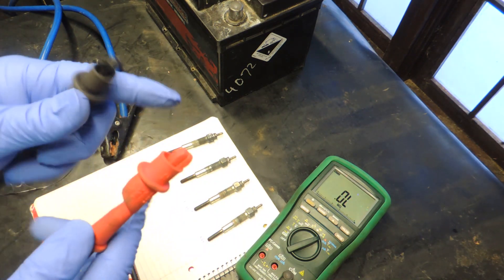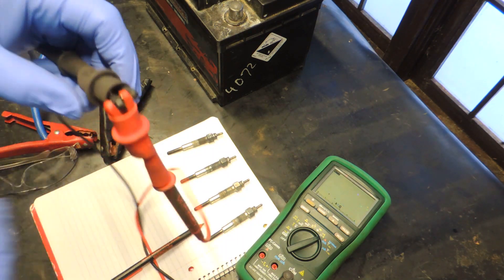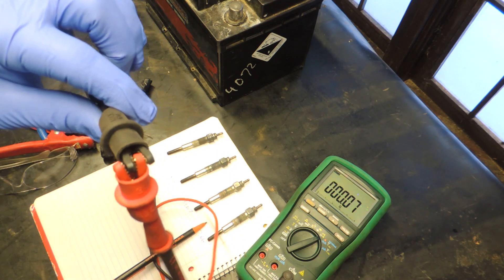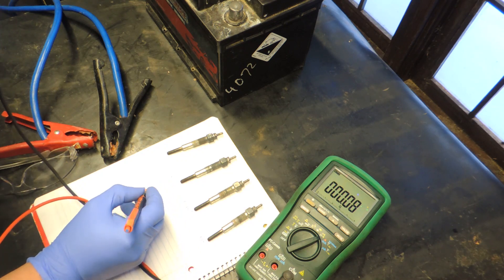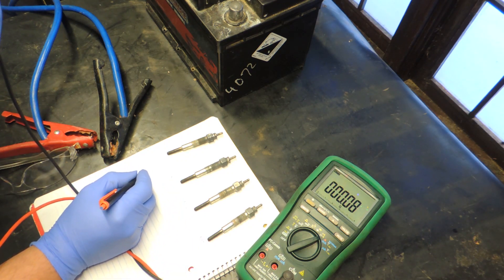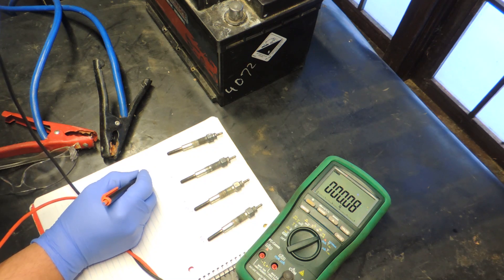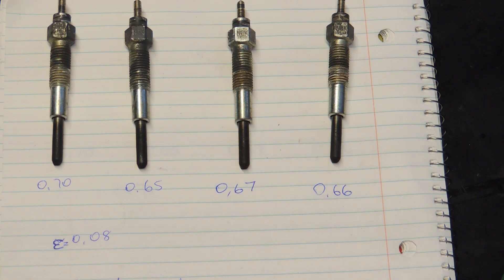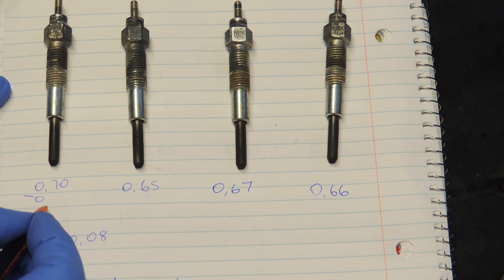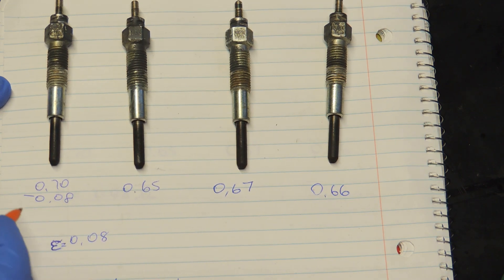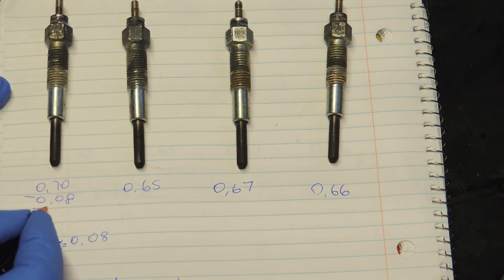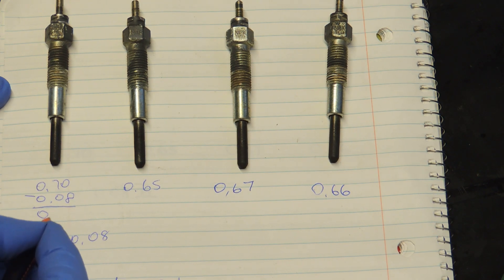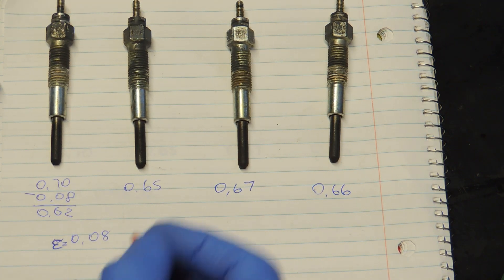Now we have all our glow plugs checked. Let's check the resistance on our alligator clips because everything has a resistance. Write it down, 0.08. We need to deduct this reading from the glow plug readings and that way will be accurate. If you like the precise numbers this is the way to go and it's simple. Subtract that number and we got our resistance.